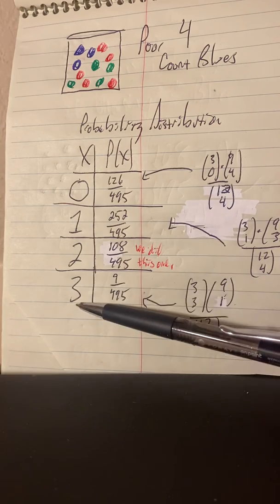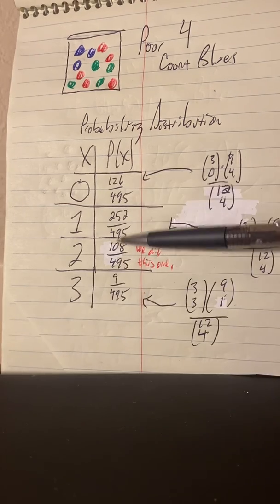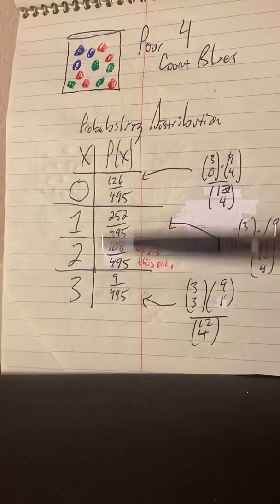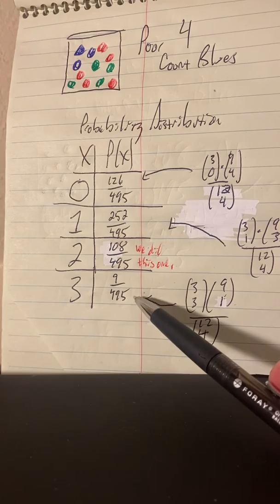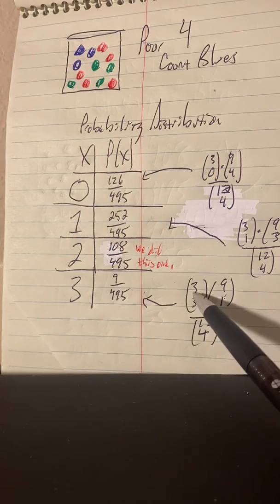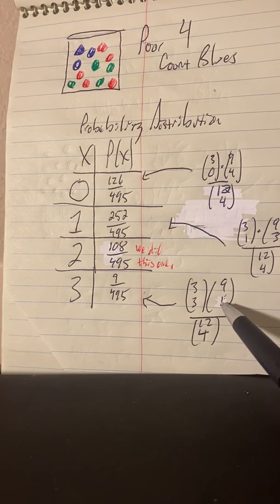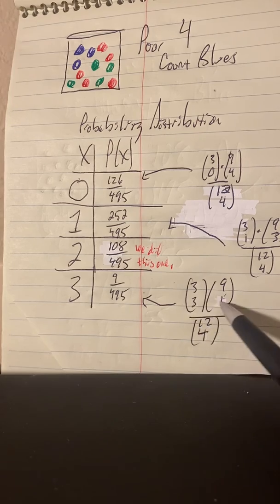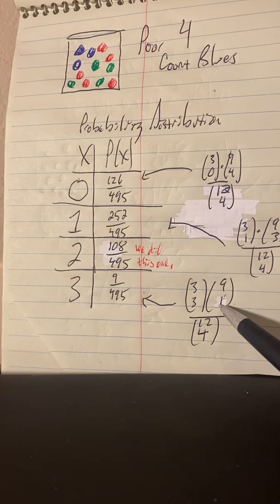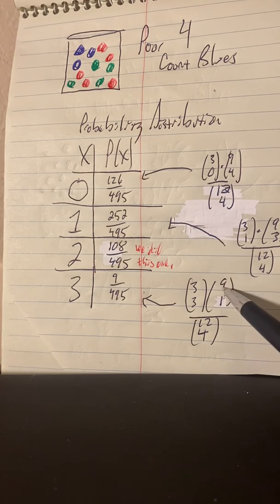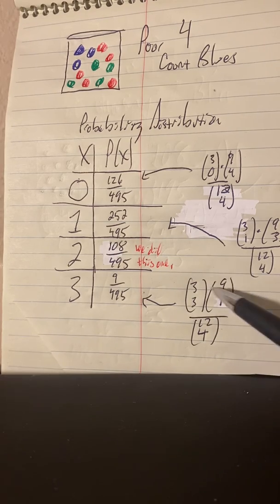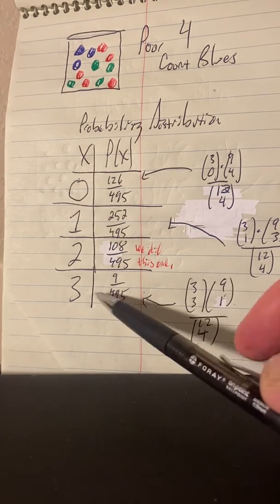Now, the last one we need to do is three. We could just add all these up and subtract from one, but I want to be able to check my probability distribution, so I'm going to go ahead and compute it by force. To get three blues, I'd have to choose all three of the blues from the three blues, and then I'd have to choose one other colored ball to make the total of four balls because we're pouring out four. Three choose three is one and nine choose one is nine. So we get nine in the numerator, and this is 495 as always.